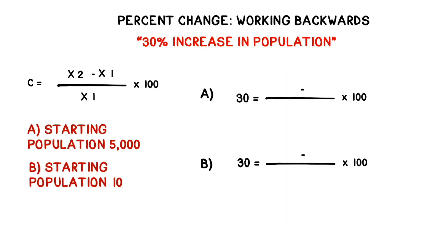If the goal is to increase the population by 30 percent, input 30 where the C goes, and then add in other given values. Here you have the initial population. In this case, the final population is the unknown, and so that's what we're going to solve for. Again, see if you can solve this yourself before you watch me do it.